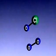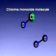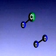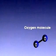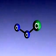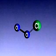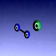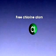Forming a molecule of chlorine monoxide, the remaining two oxygen atoms form an ordinary oxygen molecule. In this way, an ozone molecule is destroyed. Chlorine monoxide reacts easily with single oxygen atoms in the atmosphere, leaving a free chlorine atom that can destroy more ozone.